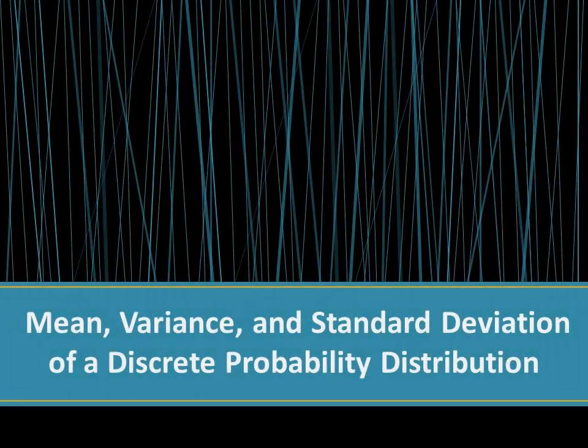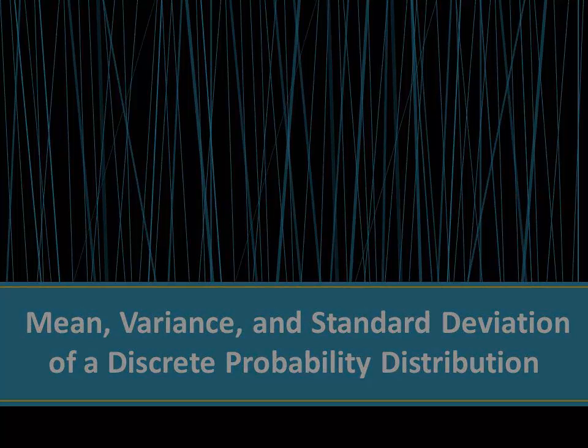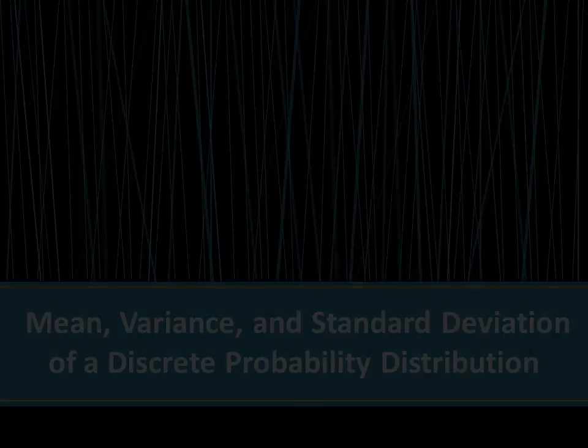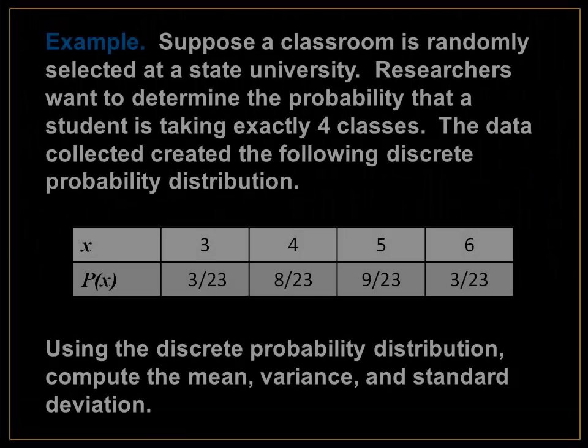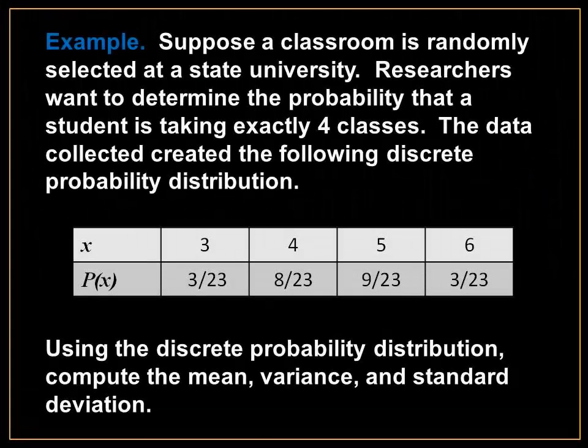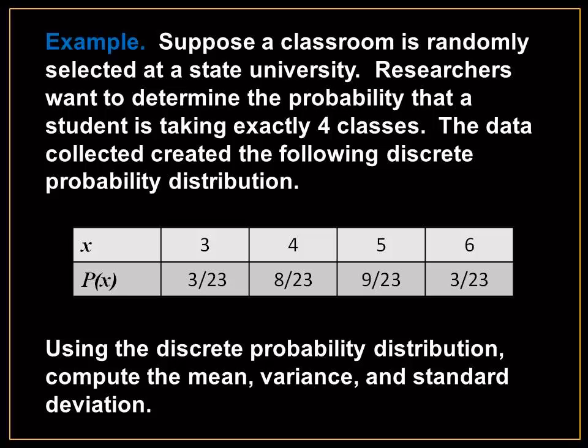The mean, variance, and standard deviation of a discrete probability distribution. For example, suppose a classroom is randomly selected at a state university. Researchers want to determine the probability that a student is taking exactly four classes. The data collected created the following discrete probability distribution.